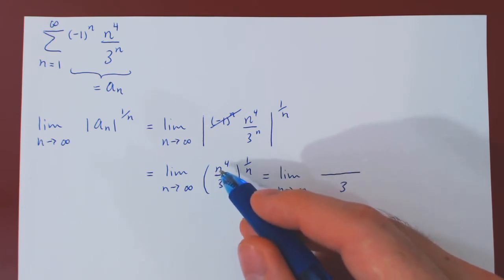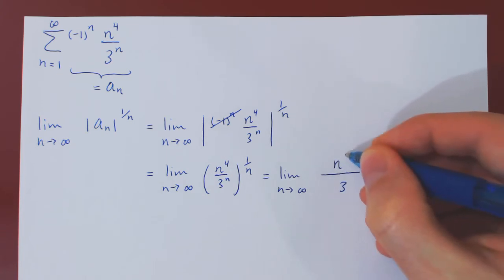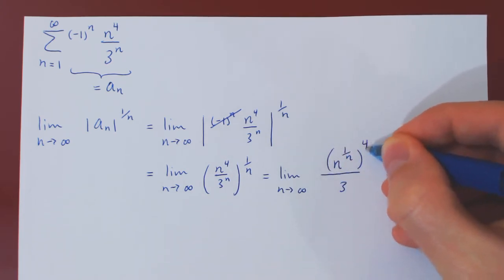The numerator, what I will do is I will swap the powers 4 and 1 over n. So this can be written as n to the 1 over nth power, all to the 4.